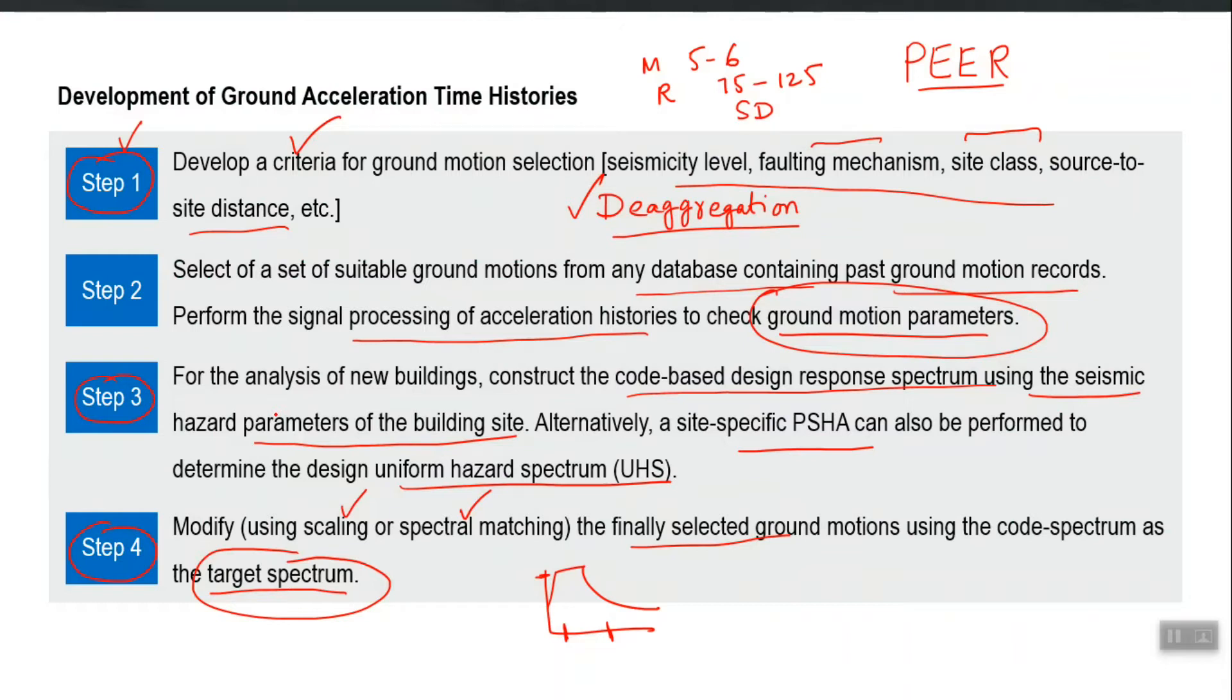For the purpose of solving m u dot dot plus c u dot plus k u equal to minus m i u g dot dot. Now this u g dot dot function of time, this one on the right hand side is already matched ground motion.